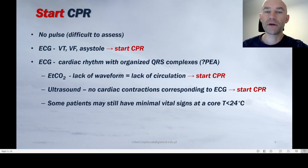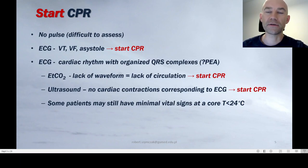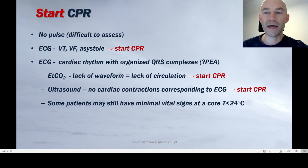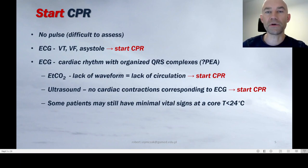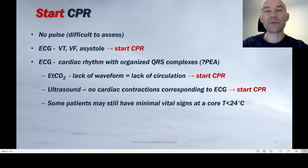It is difficult to assess if there is a pulse or not. If you monitor the cardiac rhythm and you have ventricular tachycardia, pulseless ventricular fibrillation, or asystole, you should start CPR — chest compressions and ventilation. When on the ECG you have a cardiac rhythm with organized QRS complexes, it might be pulseless electrical activity or electrical activity with some perfusion. To find out if there is any circulation, it is recommended to use capnography. If there is a lack of wave — suggesting no perfusion to the lungs and no CO₂ exchange — that confirms PEA and you should start CPR.